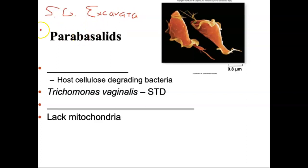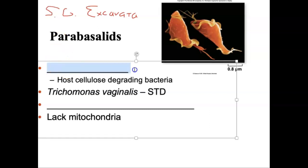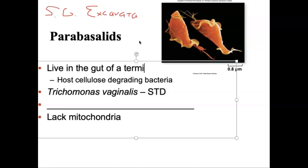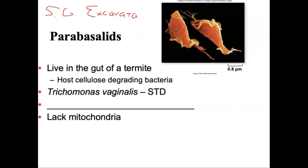Within supergroup Excavata, there's a subcategory known as Parabasolids. When we look at Parabasolids, we want to look at where these things are found. There's one variety that will actually live in the gut of a termite. Those little insects that chew up your house — they eat the wood, it goes into their digestive system, and then it gets digested and broken down by Parabasolids. But it's not actually the Parabasolid that digests the wood — it's the bacteria inside the Parabasolid that is digesting the wood.